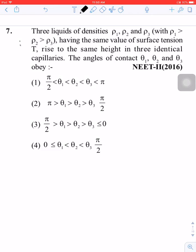The angles of contact are theta 1, theta 2 and theta 3. We have a relation between theta 1, theta 2 and theta 3, which is Rho 1 greater than Rho 2 greater than Rho 3. Okay, let's start solving.